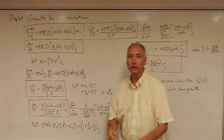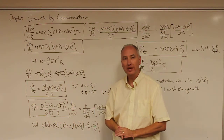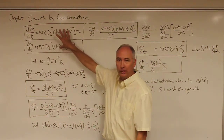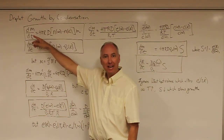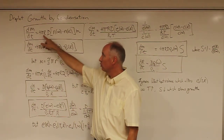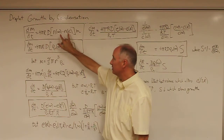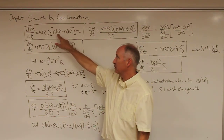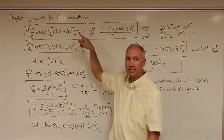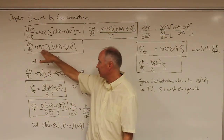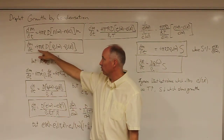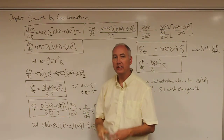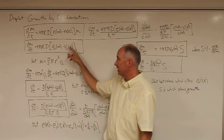In this lecture, we're going to continue our derivation of the rate of growth of an individual droplet due to vapor condensation. Last time, we developed two equations where the mass growth rate of the droplet was equal to 4πr times the diffusivity of water vapor in air times the difference in the water vapor number concentration far from the droplet and at the droplet surface times the mass of an individual water vapor molecule. In the second equation, the growth rate equals 4πr times the diffusivity times the difference in the density of water vapor far from the droplet minus the density at the droplet surface.